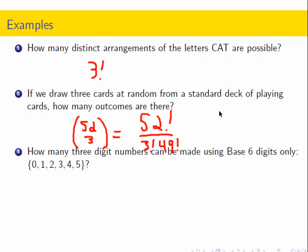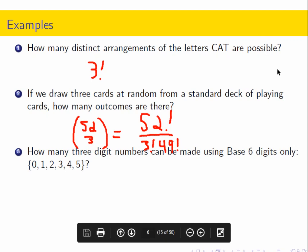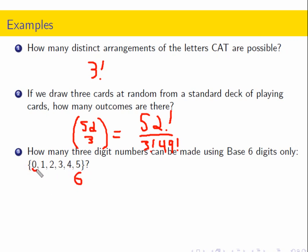How many three-digit numbers can be made using base-6 digits only? In base 6, we have the digits 0, 1, 2, 3, 4, and 5 — six digits total. This is a Cartesian product. I have six outcomes that can go in the first slot, six possible digits for the second slot, and six for the third slot. So we have 6 cubed, which is 216.